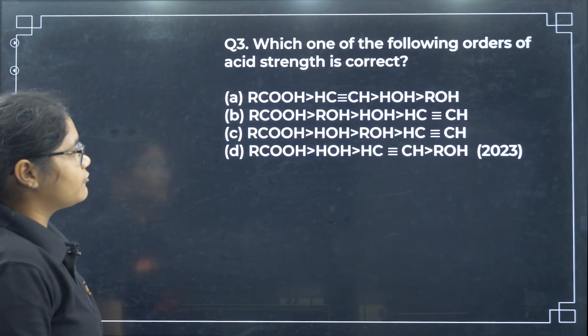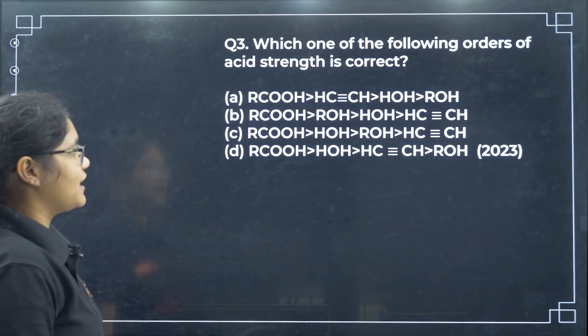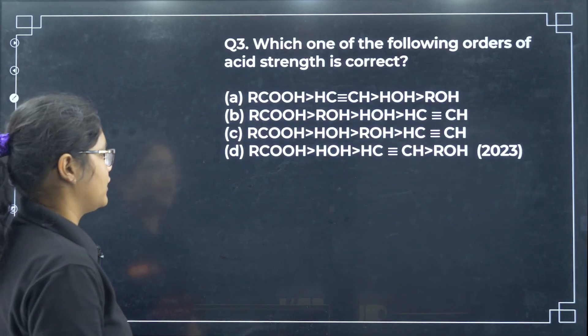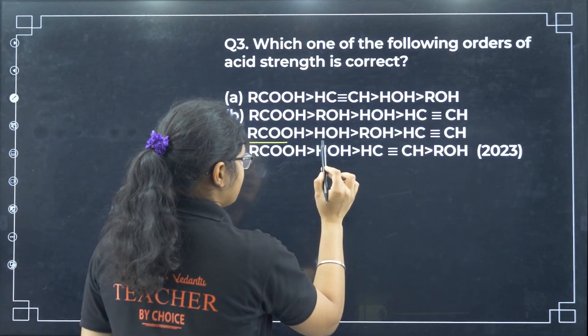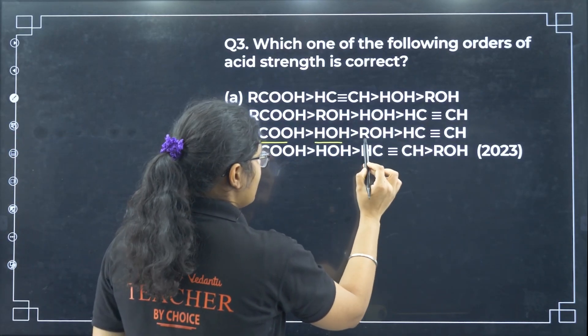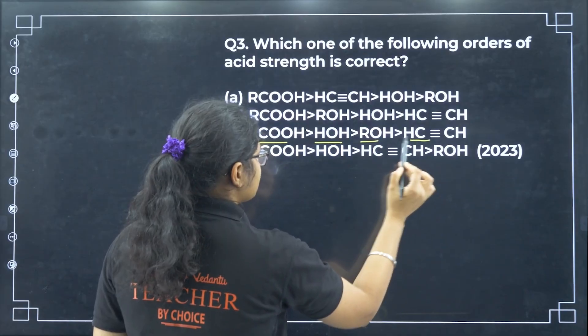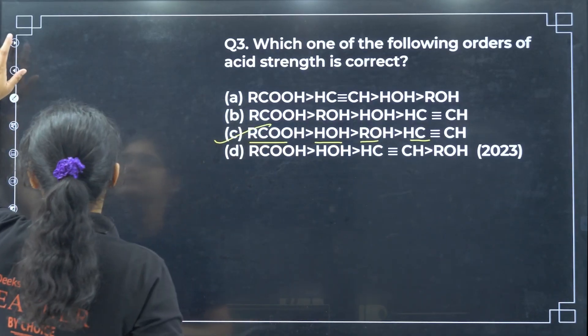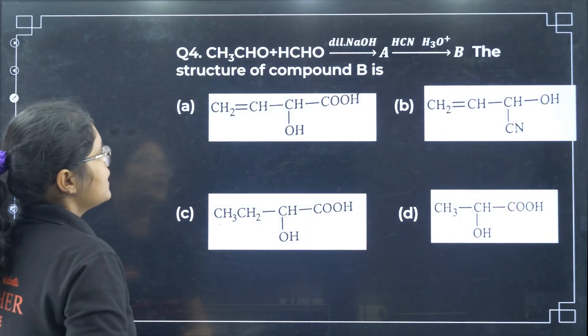Which one of the following orders of acidic strength is correct? The correct order is acetic acid, then water, then alcohols, and then ethane. So option number C.